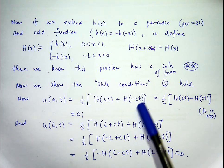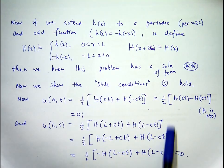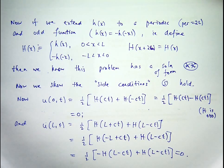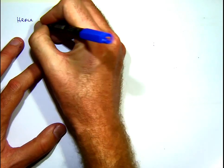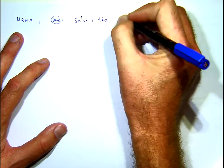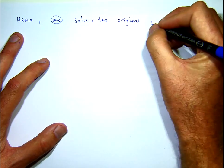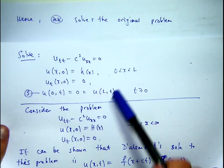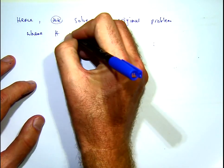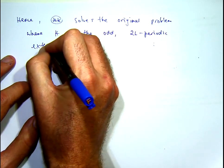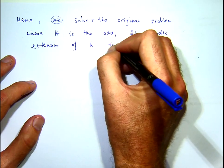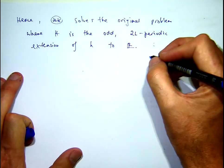So what this means is that, I mean, if you worked on these things then you should be able to come up with those things. You'd say, okay, well in order for this to be 0, if I assume that it's an odd periodic extension, then I get what I want. Hence, double star solves the original problem, where H is the odd 2L periodic extension of h to the real line.